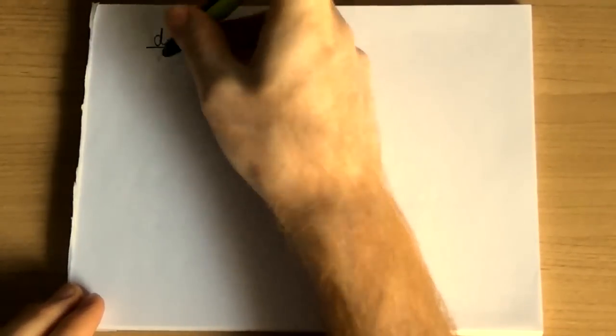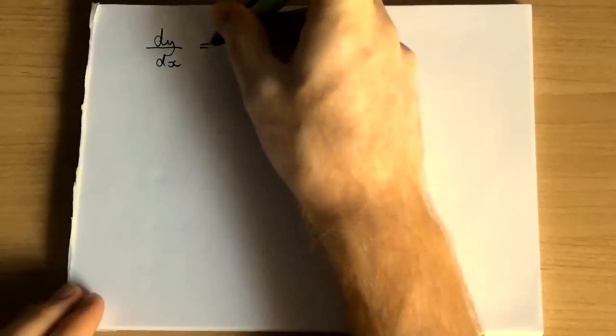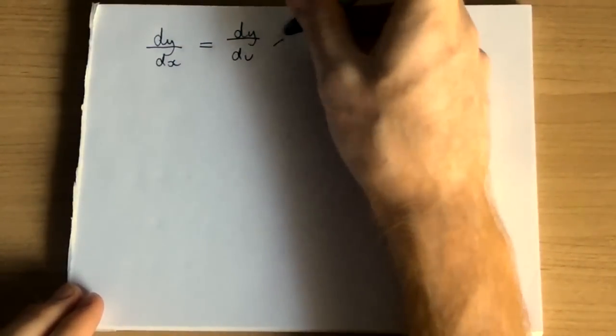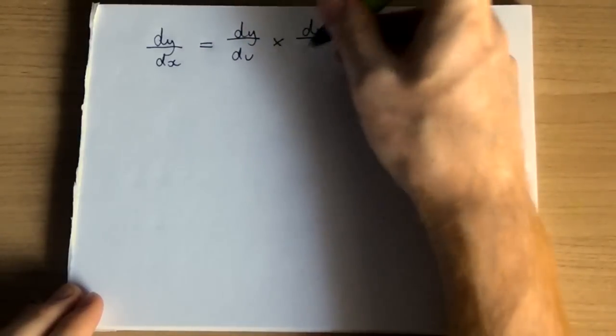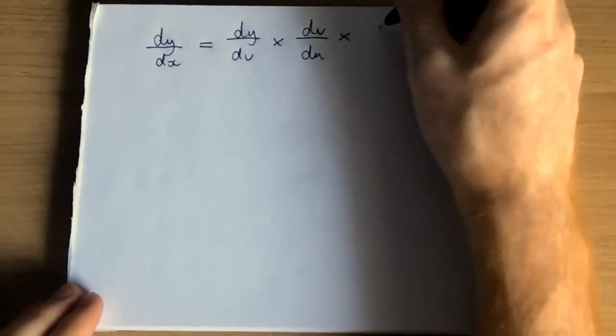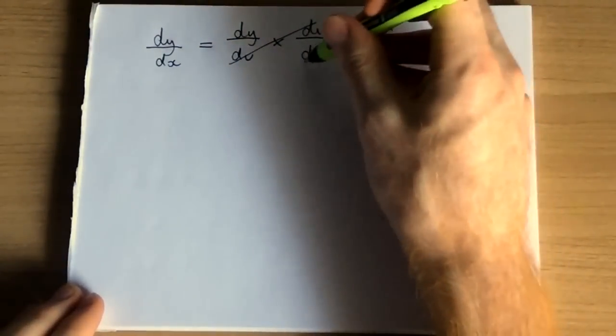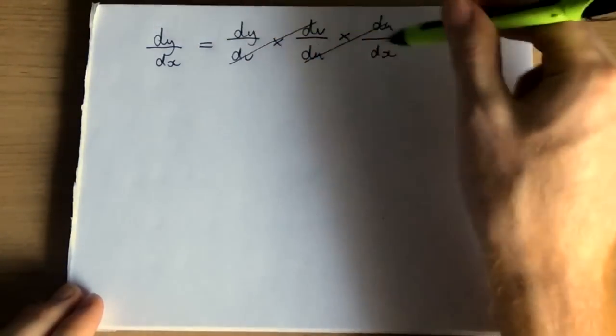So we're going to use the chain rule with three functions. dy/dx equals dy/dv times dv/du times du/dx. You can see that these cancel out equals dy/dx.